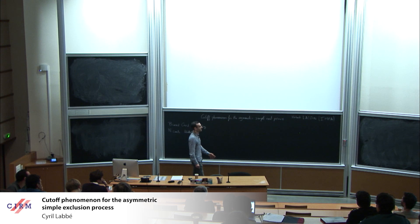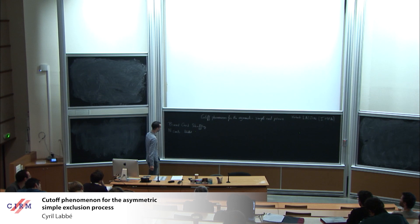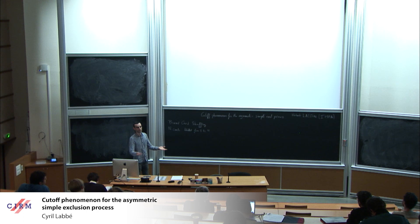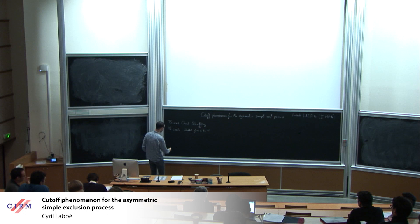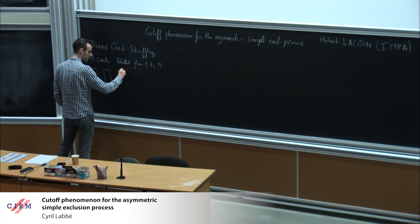This is joint work with Hubert Lacroix from Rio. I start with an auxiliary process called the biased card shuffling. I have a deck of n cards labeled from 1 to n, and a configuration of cards is just the n cards in some order. For instance, I have my n cards in front of me.